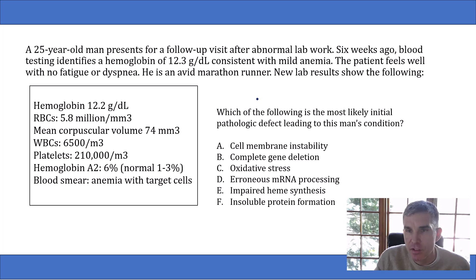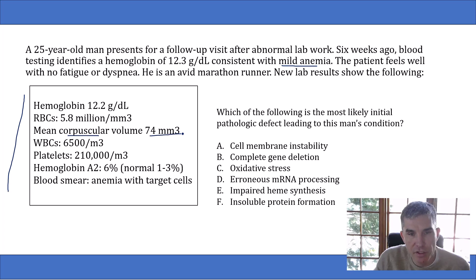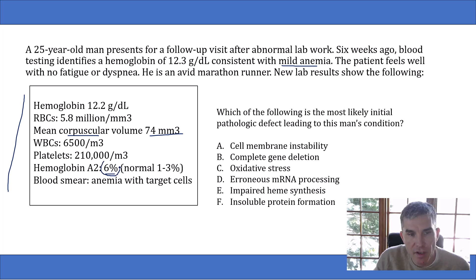The first thing you should recognize after reading this question is that it's a hematology question looking for the cause of this man's mild anemia. Looking at the labs, his MCV is 74, which is low — so he has a microcytic anemia. And then his hemoglobin A2 is 6%, which is above normal. Right away, when you see this finding, you should recognize that this is a case of beta thalassemia.